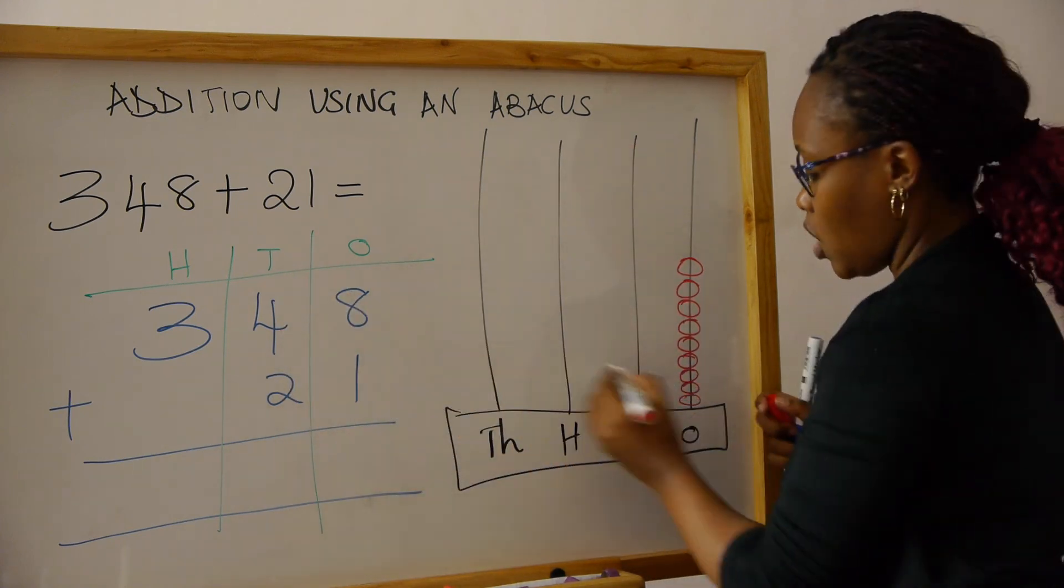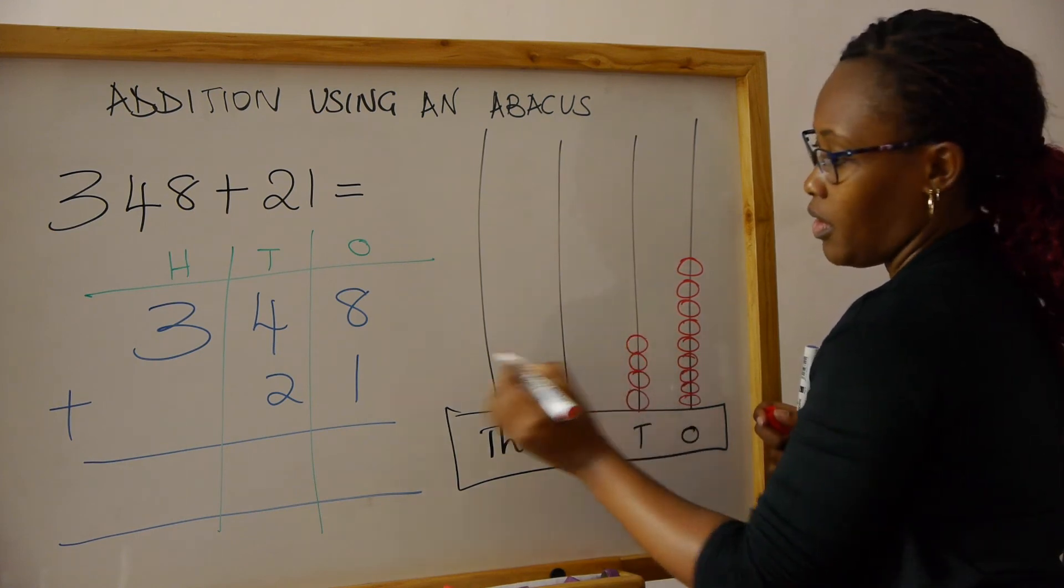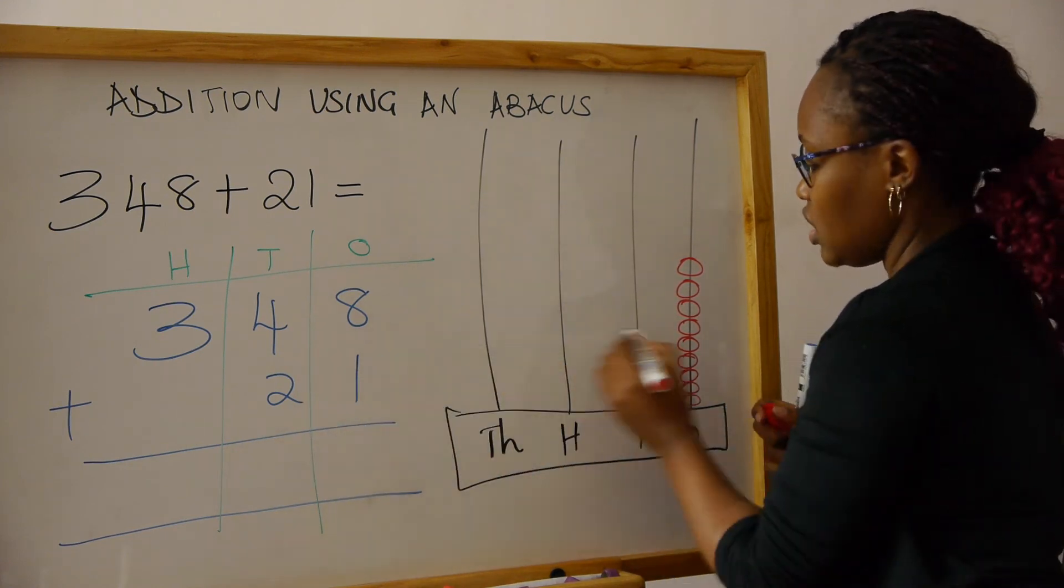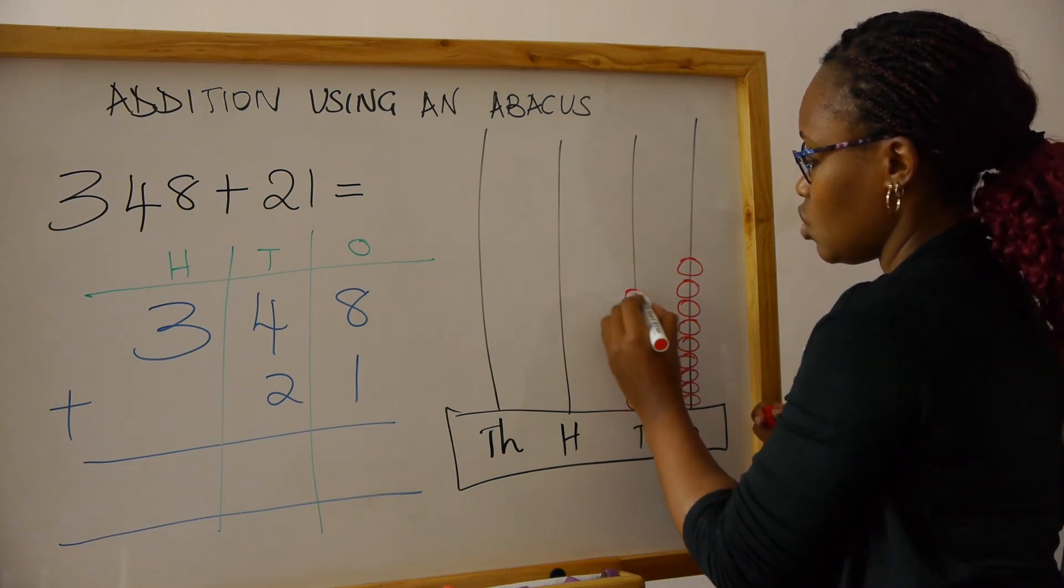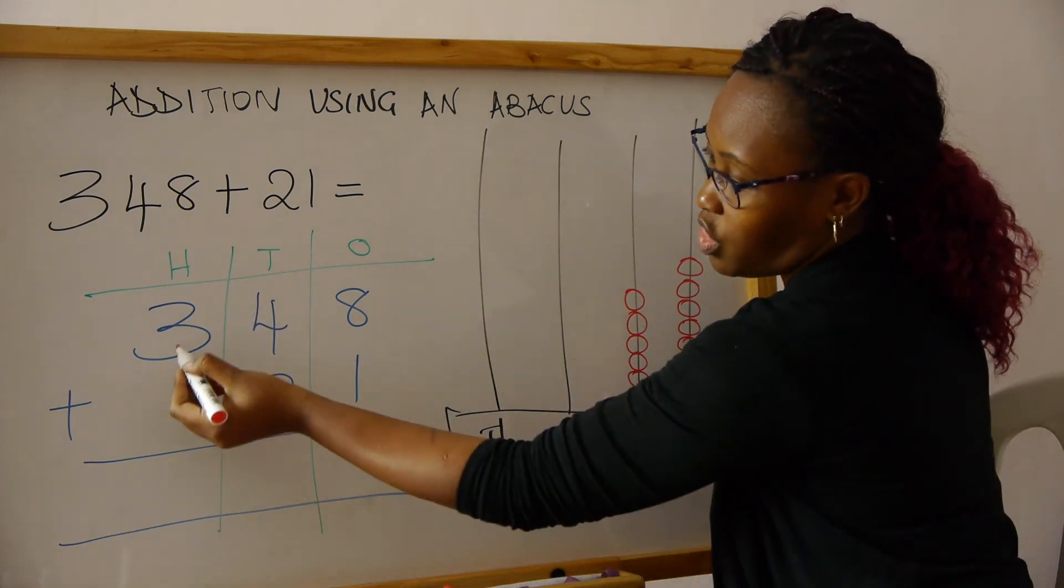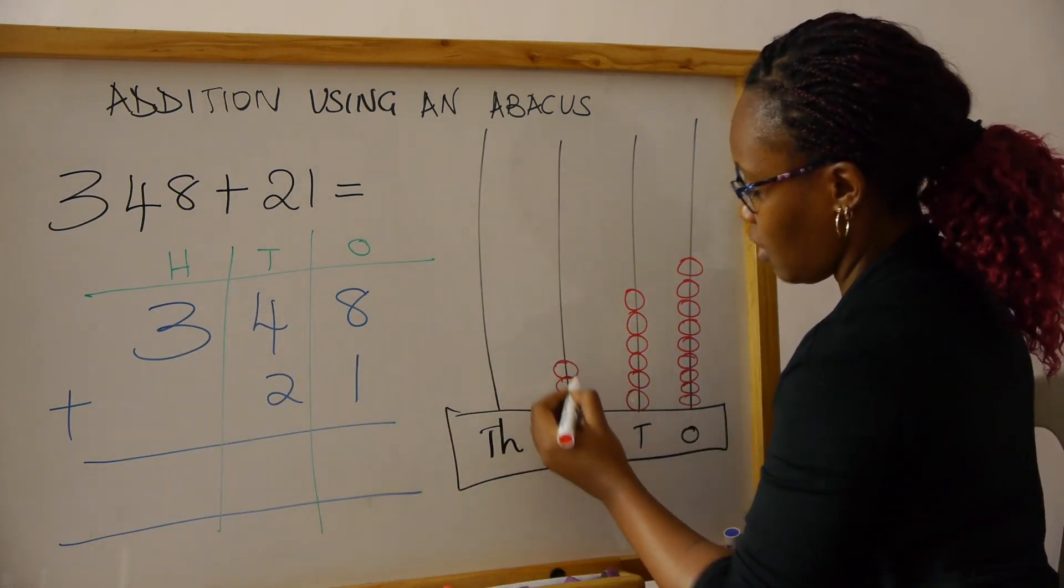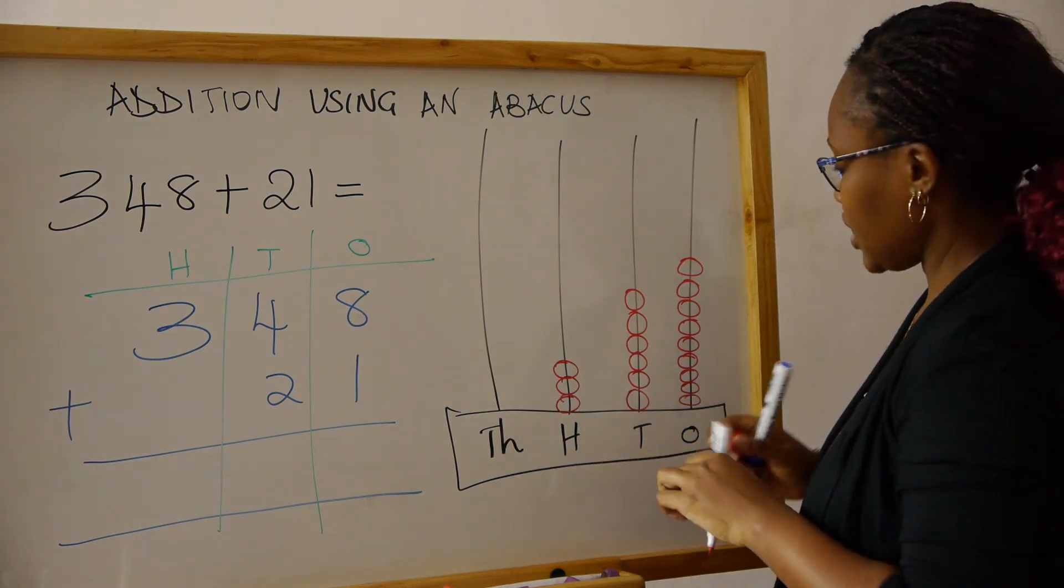Then we start with four, and then we put two beads. And then now we move to the hundreds. We have three, so we draw three beads. After we're done, now we count all of them and see what our answer is.